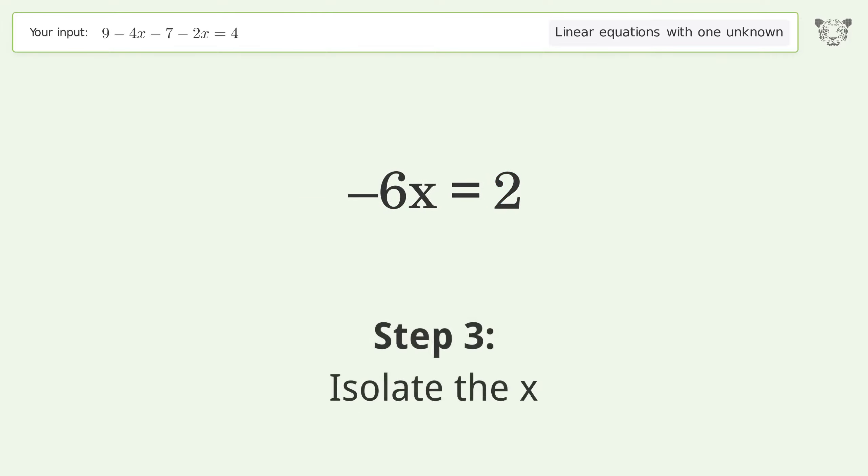Isolate the x. Divide both sides by negative six. Cancel out the negatives.